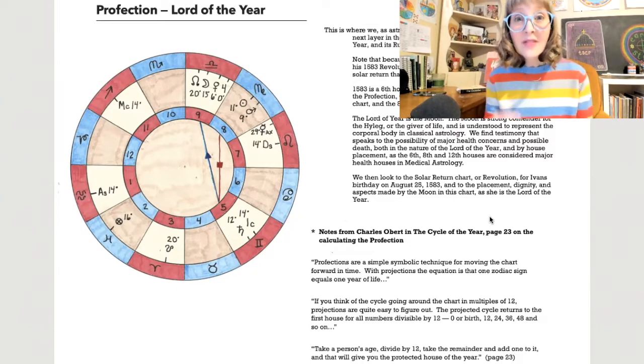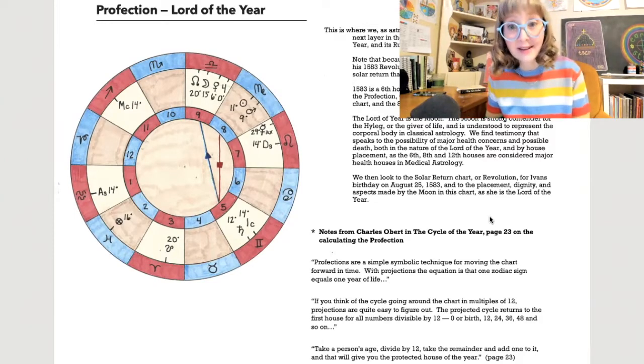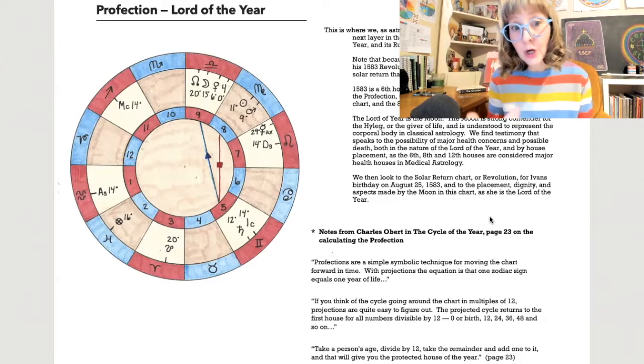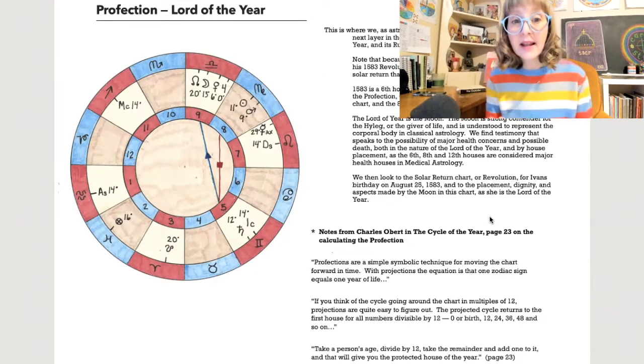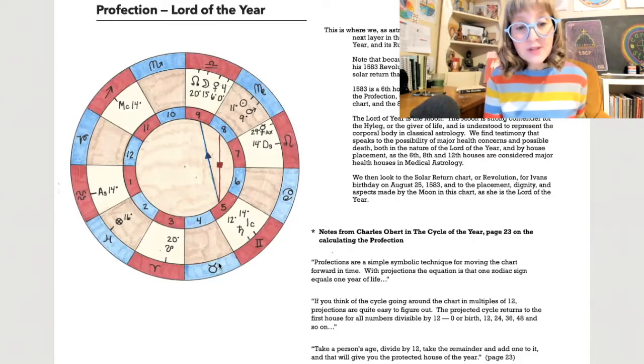We're going to move on now to the perfection or the lord of the year. This is the second piece of the predictive package. This is where we as astrologers, with our life on the line here, move to the next layer in the predictive package: the perfected sign of the year and its ruler, or the lord of the year.